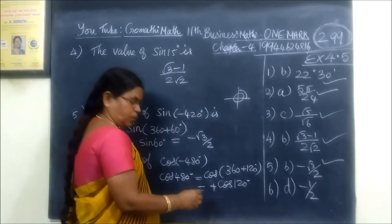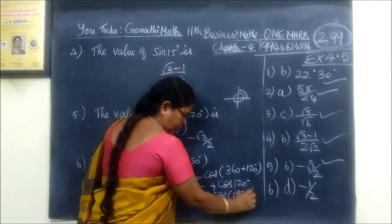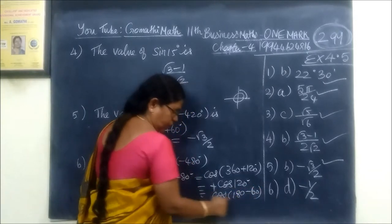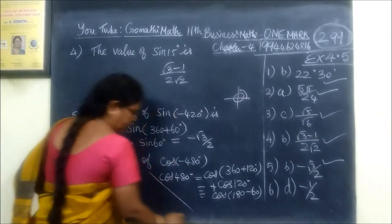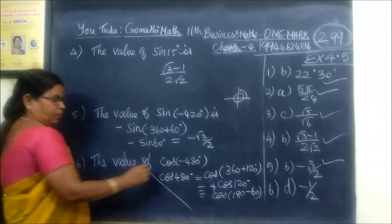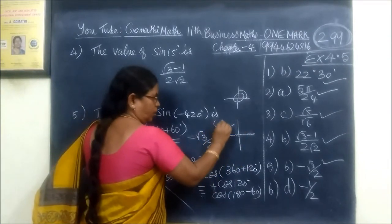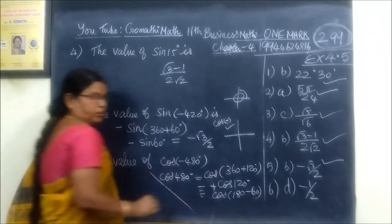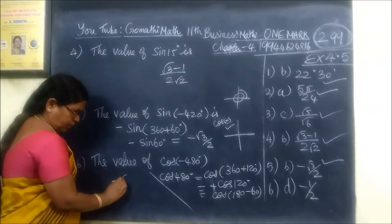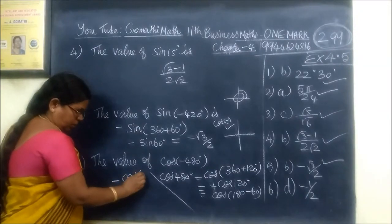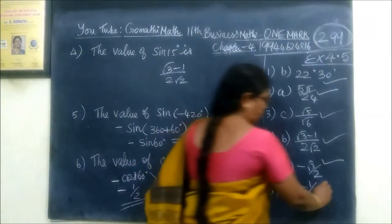Cos of 180 minus theta, worthiness of theta, 180 minus 60, 120. 180 minus 60, everything is equal to the second quadrant. Second quadrant is cos minus. Sin is positive and negative. Minus cos 60. Cos 60 is value 1/2. So the answer for this is minus 1/2.